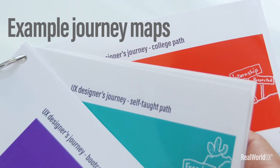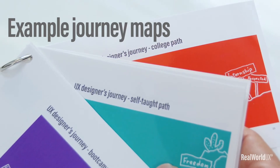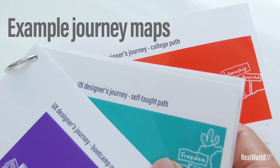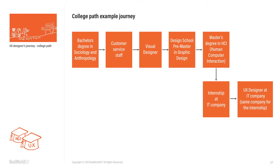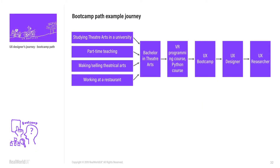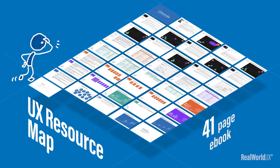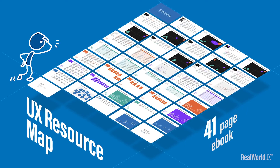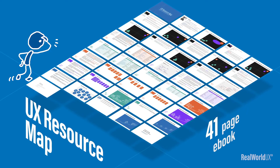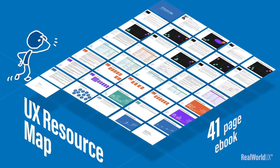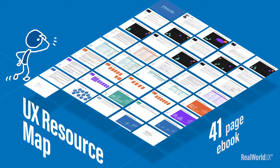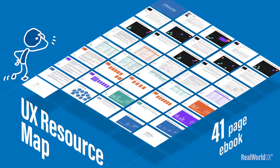Another unique thing about the UX Resource Map is example journey maps for various different paths people actually took to become a UX designer. For example, this is a journey path taken by one person who took a college path. Another journey path taken by the boot camp path looks like this. All the information gives you context and perspective into the landscape, which should be extremely helpful for you to analyze what would be the best fit for your current needs.